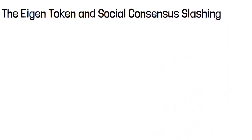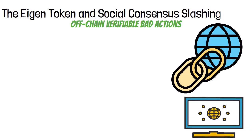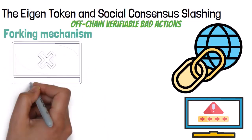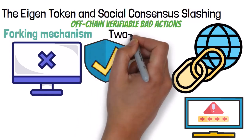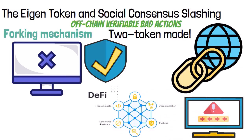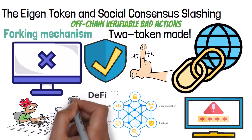The EigenToken introduces a novel approach to slashing through its social consensus model, designed to address off-chain verifiable bad actions — such as providing inaccurate data via oracles — that are not directly visible on the blockchain. To manage this, Eigen employs a forking mechanism: if a validator engages in bad behavior, the network can fork the token to distinguish legitimate from compromised versions. The EigenToken also operates on a two-token model, separating staked tokens subject to forking from tokens used in non-staking scenarios like DeFi, simplifying the user experience.